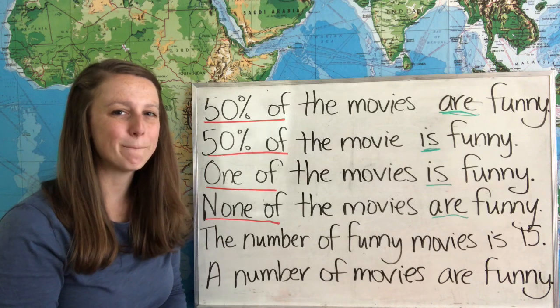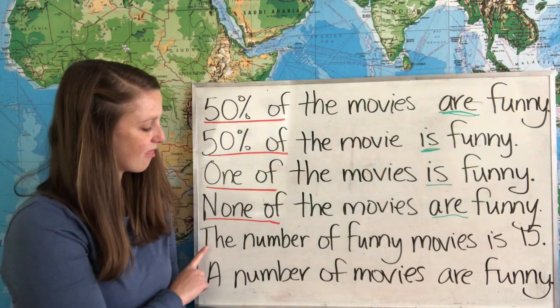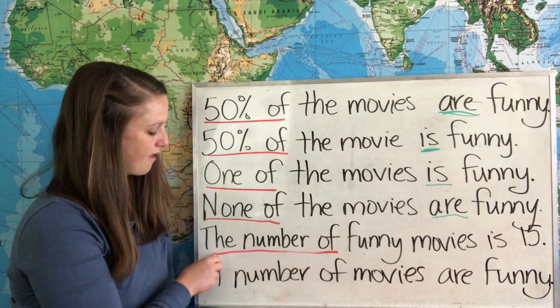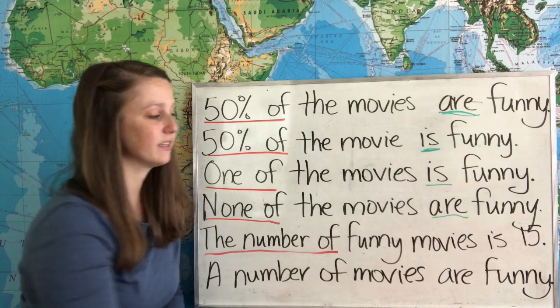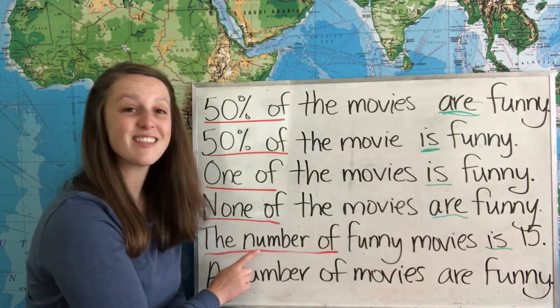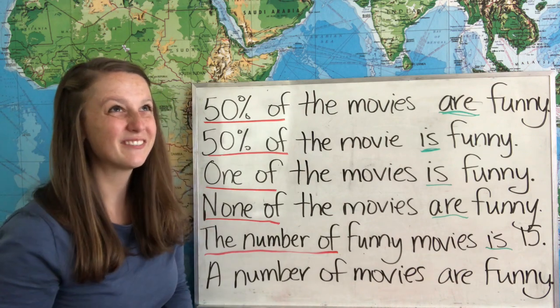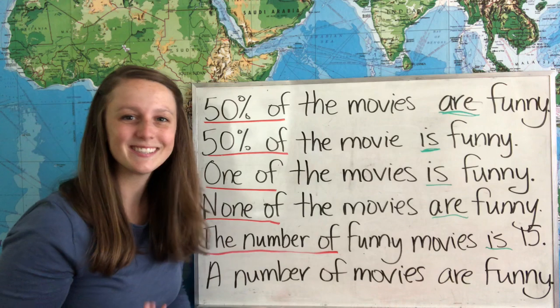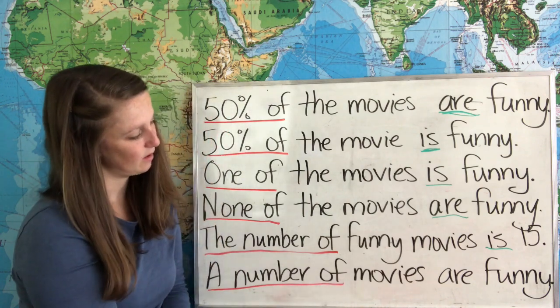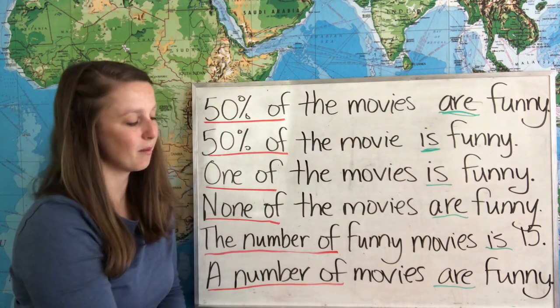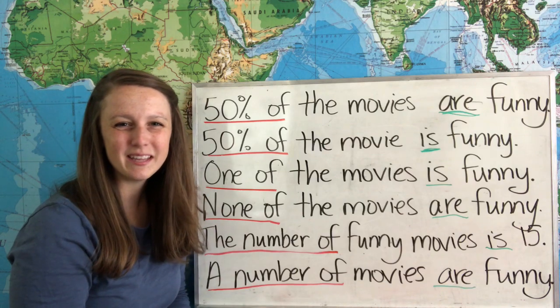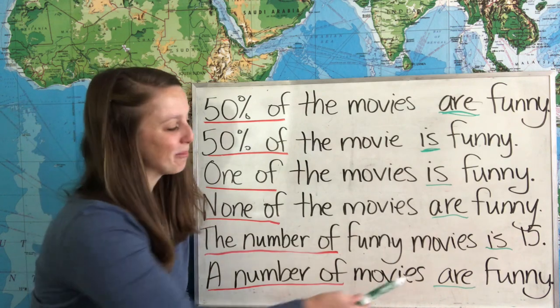Now we're going to get a little bit tricky with the word number. Our next example is the number of funny movies is 15. Whenever we have the expression of quantity the number of, then we're going to use a singular verb like is. Because the subject of this sentence is not movies, the subject is the number, the number. Even though the number is 15, the subject the number is still singular. But if we change to a number of, we use plural form. Because a number of is a synonym for several or a few. It means more than one, so it's always going to have a plural verb.